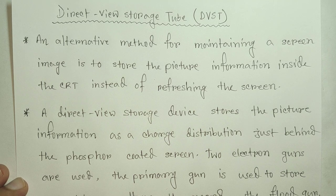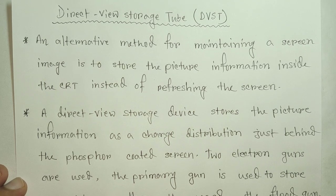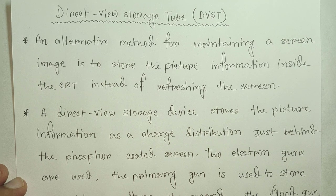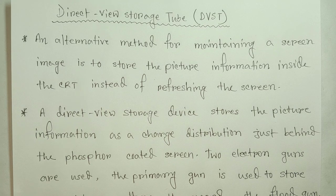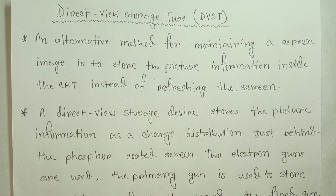Today we are going to talk about DVST, which is called Direct View Storage Tube. Direct View Storage Tube is the alternative method for maintaining screen image, to maintain the picture information. The image is the picture information which is stored inside the CRT. There is a cathode ray tube which stores the picture information instead of refreshing the screen.